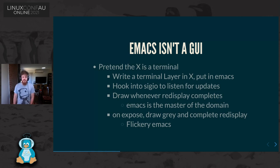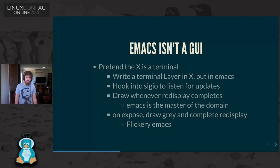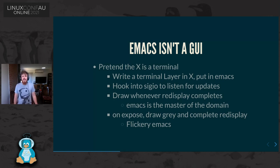Emacs wants to own every part of its loop, so it has its own event loop for redisplay. If the redisplay system gets asked to draw on the screen by X — an expose call — and redisplay is not finished, Emacs will tell it to bugger off: 'here's a grey rectangle, I'll fill it in when I'm ready.' To this day, Emacs wants to be the master of its own domain. This grey-rectangle approach created a flickery mess that was solved 5–10 years ago on every other major toolkit.